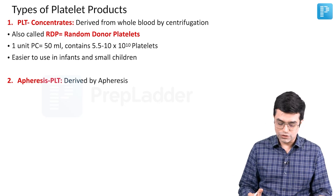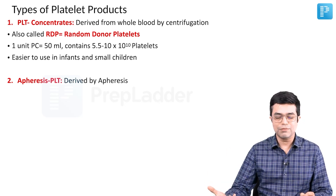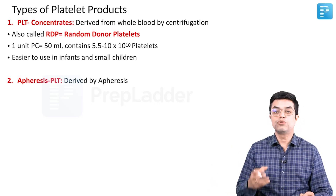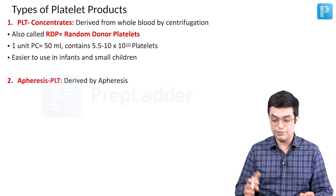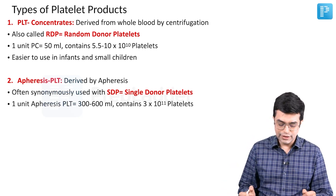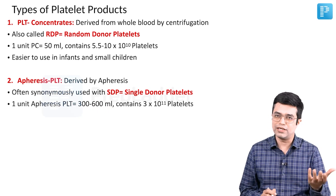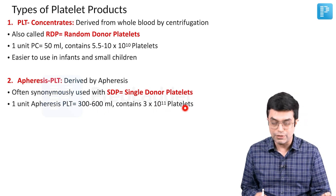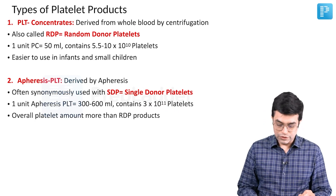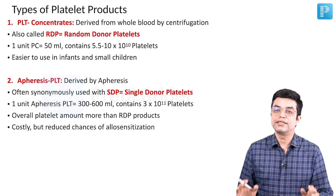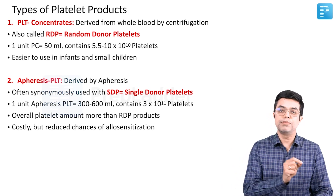The second type is apheresis platelets, also called single donor platelet (SDP). They are derived by apheresis. You cannot simply walk into a blood bank and expect to find an apheresis platelet product — you have to plan it, find a donor, and then get the required product. It is a costly product. One unit of apheresis platelet is about 300 to 600 ml, with a commonly used single value of 500 ml, and it contains 3 into 10 raised to power 11 platelets. The overall platelet amount is more in the apheresis product, but it has reduced chances of allo-sensitization — so in case of repeated platelet transfusions, apheresis platelet will be better compared to platelet concentrate.